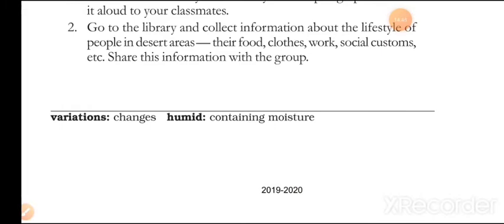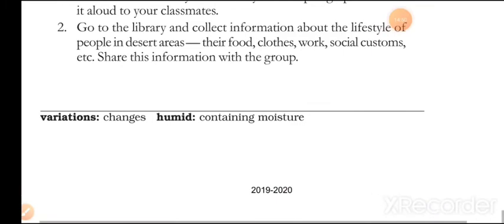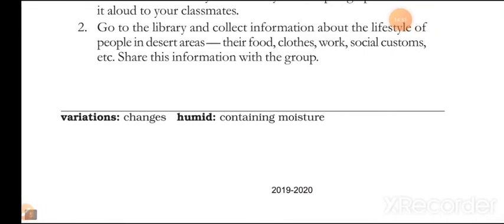Vocabulary: 'Variations' means changes. 'Humid' means containing moisture. A desert is a place where humidity is very low, because it contains very little amount of moisture in the air.